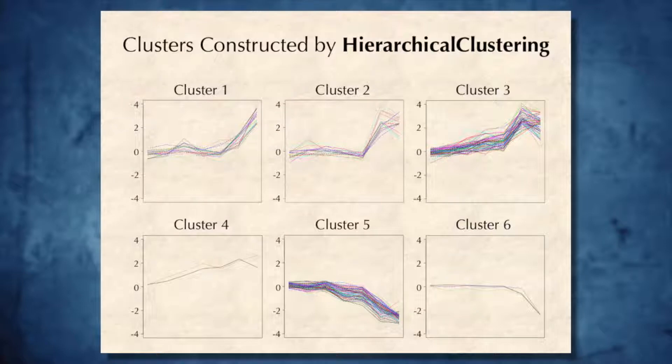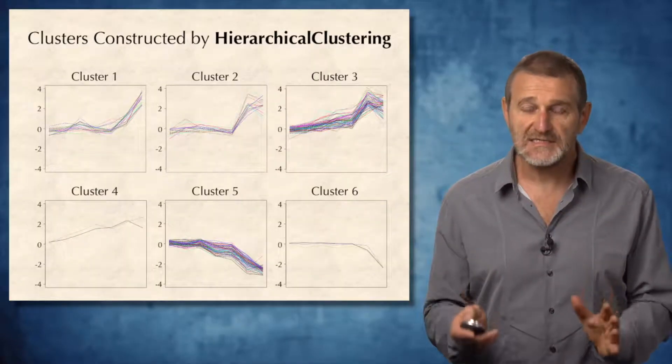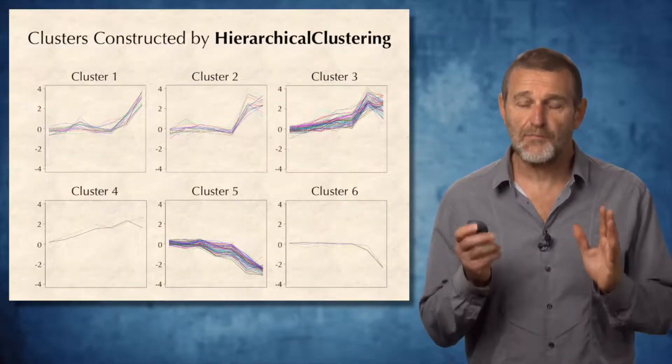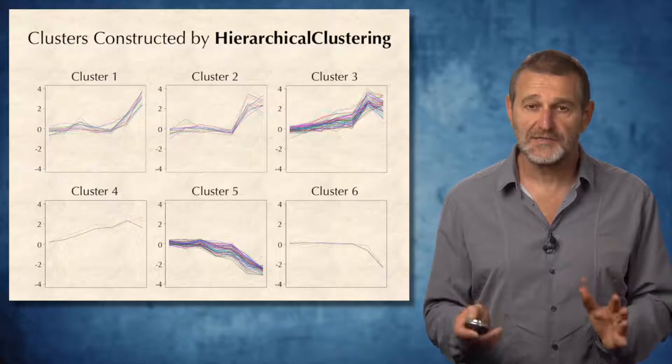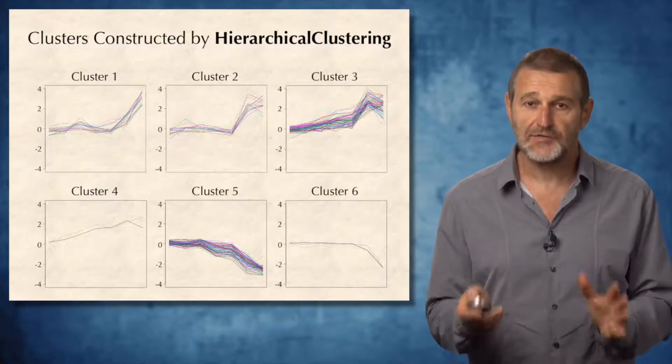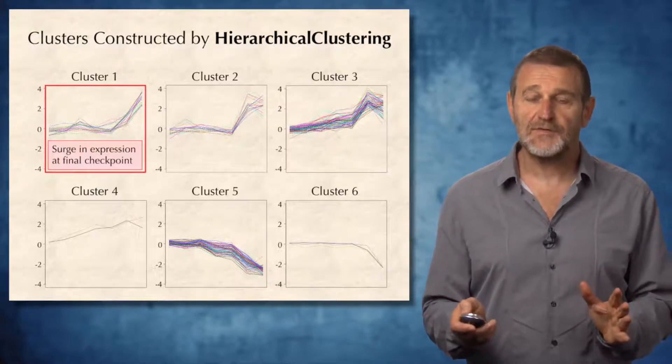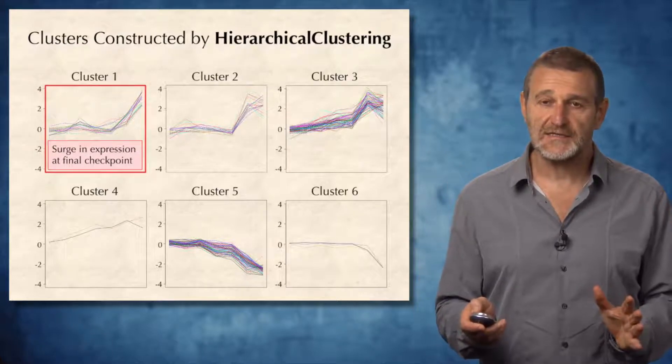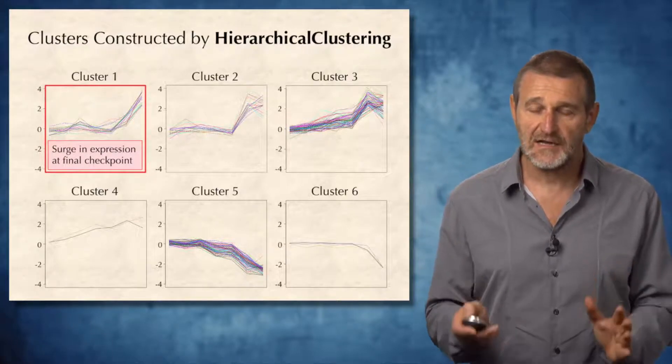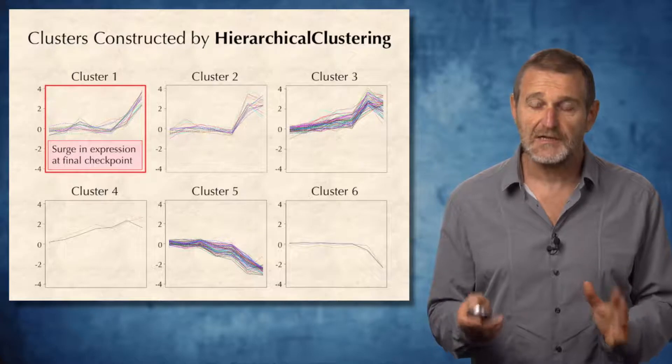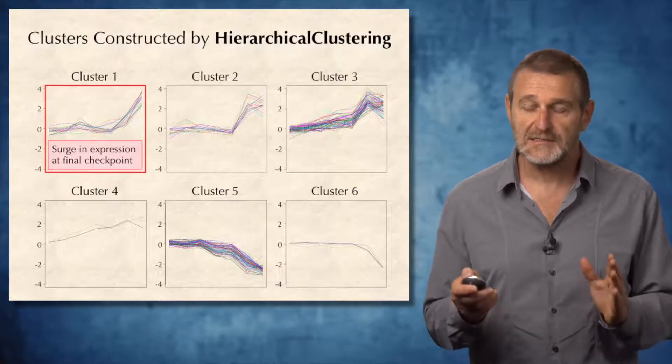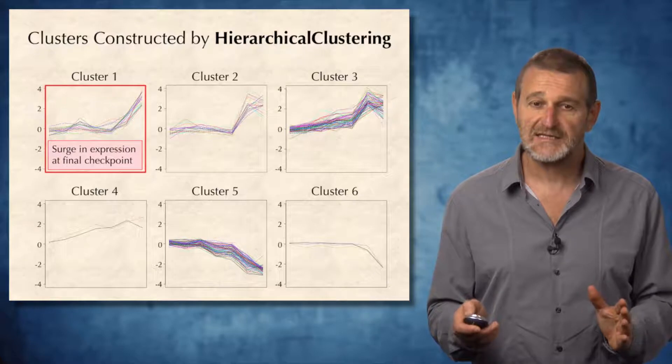These are six clusters built by hierarchical clustering for the same IS dataset that we looked at when we talked about k-means clustering. These clusters are often a departing point for biologists to decode difficult regulatory puzzles. For example, if you look at the first dataset, you will see that there is a sudden surge of expression